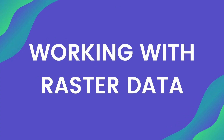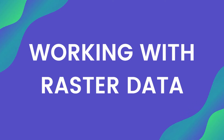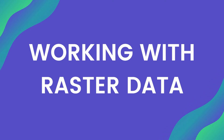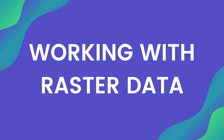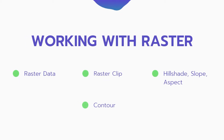We are on the fourth session of our QGIS for beginner tutorials. In this session we'll learn about raster data — what is raster data, what is raster clip, and then we'll do some raster processing: slope, aspect, and then we'll create a contour using this raster data.